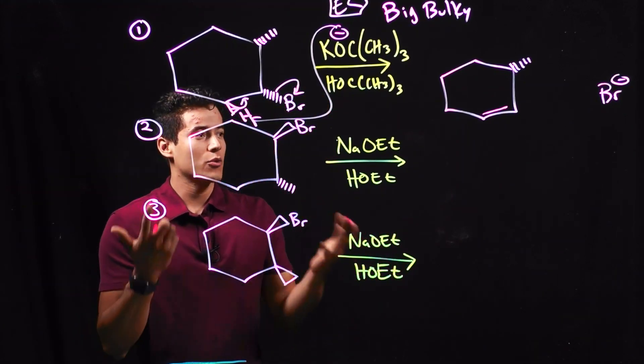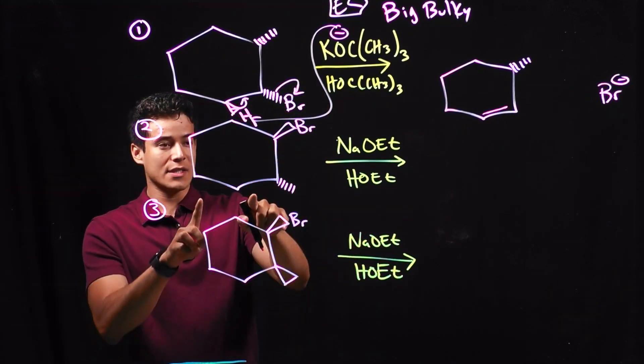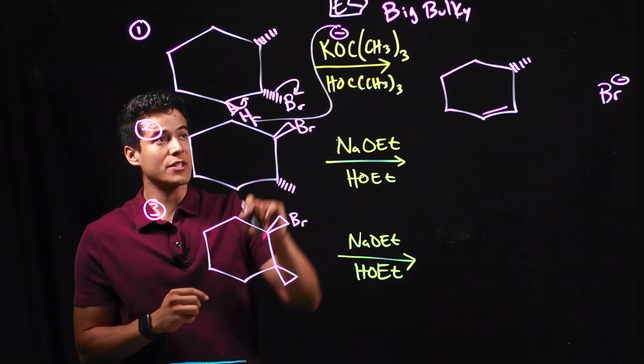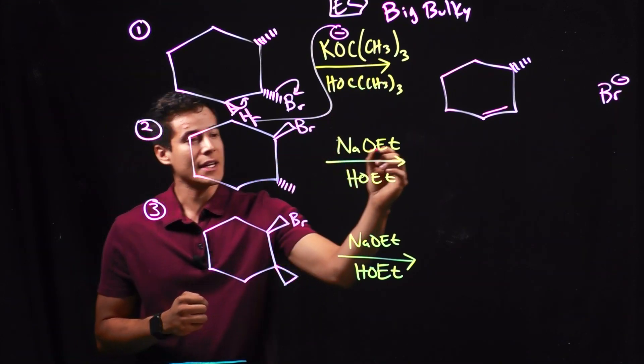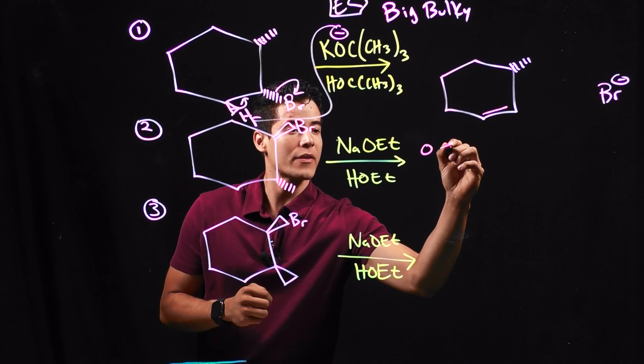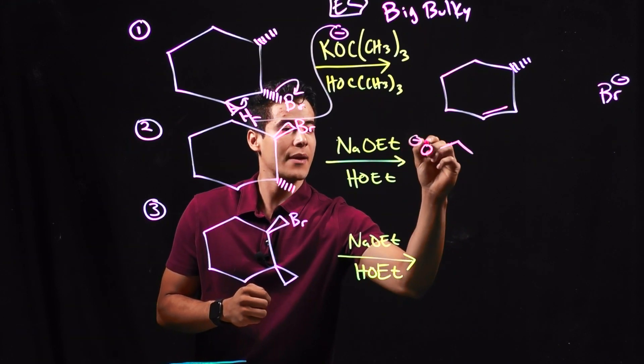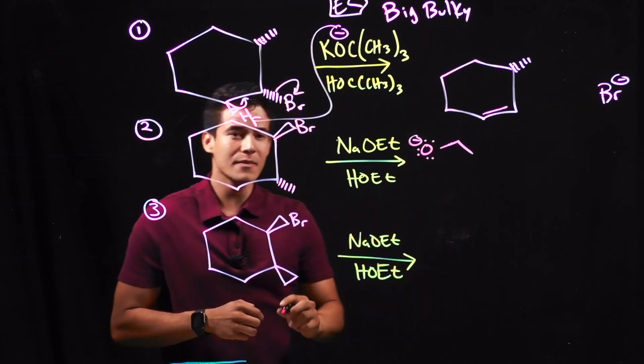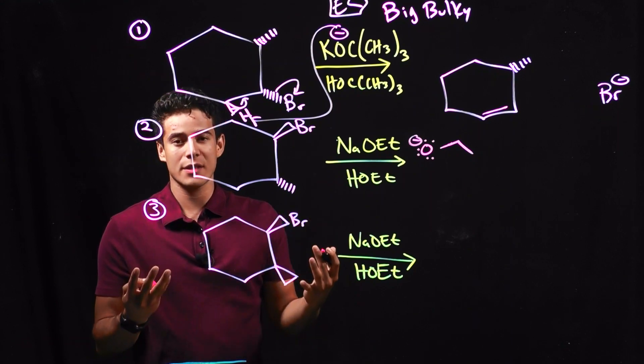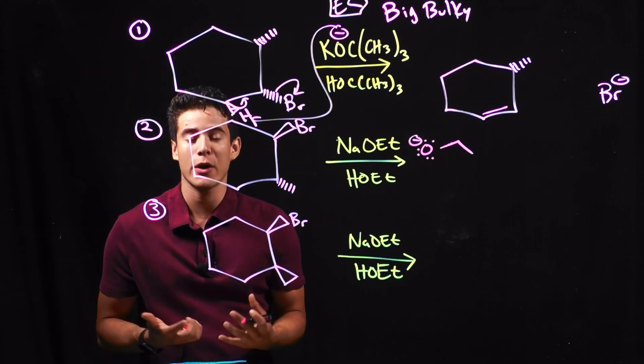So let's go ahead and move on to our next problem. Very similar idea, but in this case, we don't have a big bulky base. It's just an O with two carbons, and I'm negatively charged. So this brings up the idea of something called anti-periplanar.